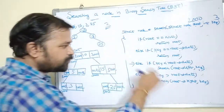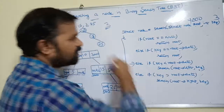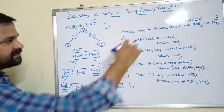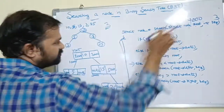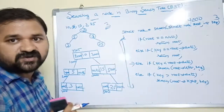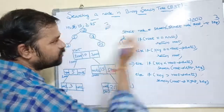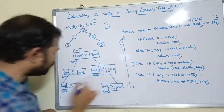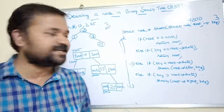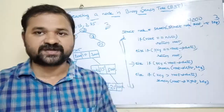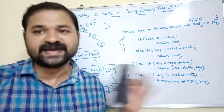Control goes to the search function with root = 4000. Is 4000 == null? False. Is key == root->data — is 3 == 3? True. So we return root, which is 4000. Address 4000 is returned, meaning our element is found in the tree.